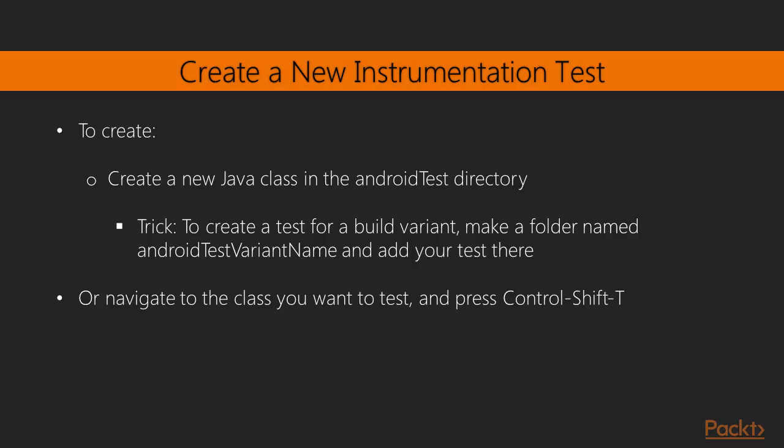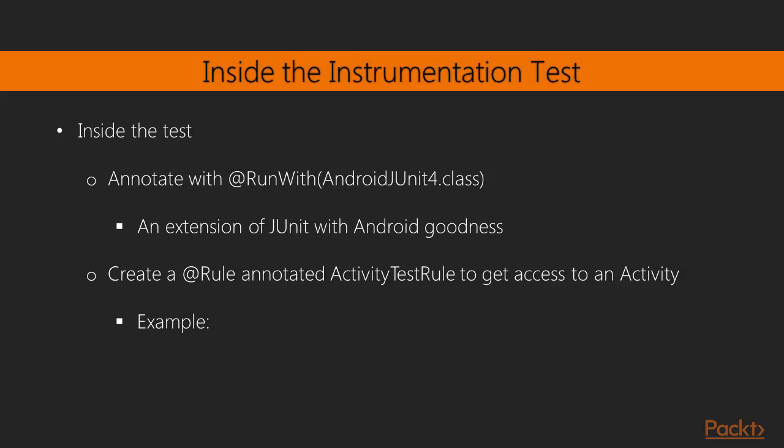There's also a quick shortcut: if you're in a class that you want to test, for example an activity, hold Control-Shift-T and that will create a new test class to test the activity you're in. Inside the instrumentation test, we need to use an annotation that we've seen earlier: @RunWith. @RunWith is going to say RunWith AndroidJUnit4.class. AndroidJUnit4 is simply JUnit4 but extended with Android-specific things — an extension or addition to JUnit.